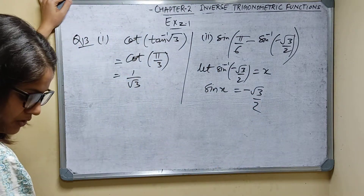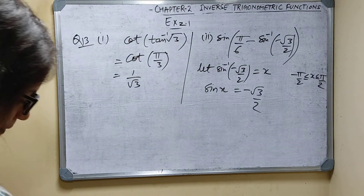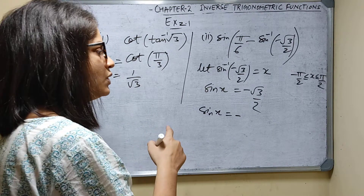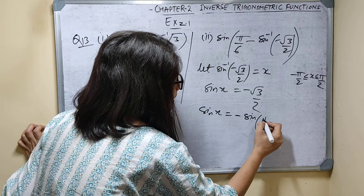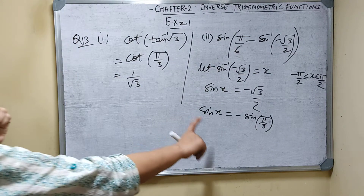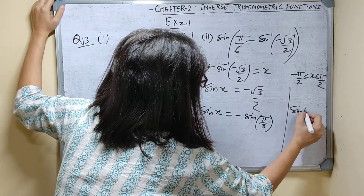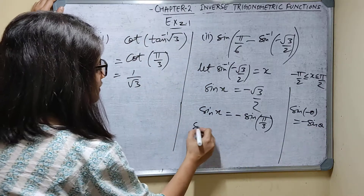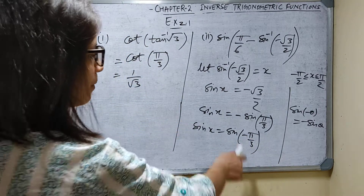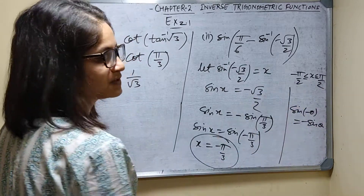Sin x equals minus root 3 by 2. The value root 3 by 2 corresponds to sin of pi by 3 (i.e., 60 degrees). So sin x equals minus sin pi by 3. Since sin of minus theta equals minus sin theta, I can write sin x equals sin of minus pi by 3. Therefore x equals minus pi by 3, which satisfies the range condition (between minus pi by 2 and pi by 2).